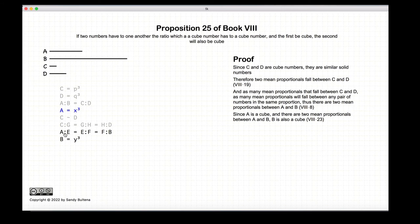If there are two mean proportionals between A and B, and if A is a cube, then B is also a cube, according to Proposition 23 of this book. And there we have it. That is the proof of this proposition.